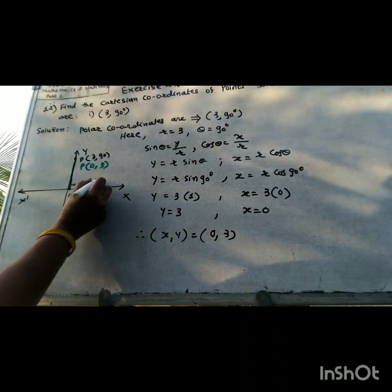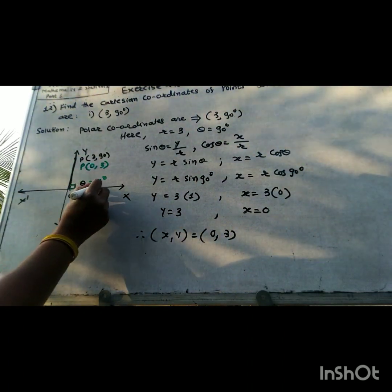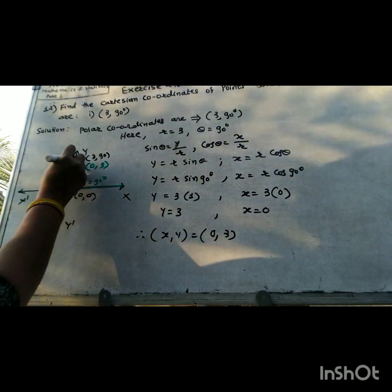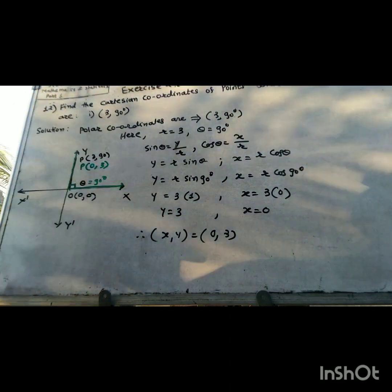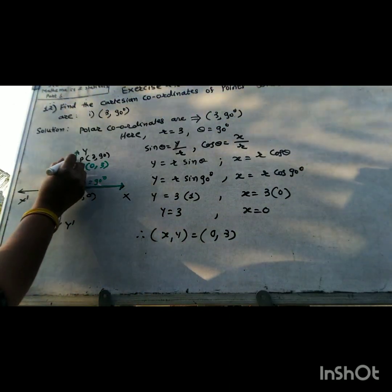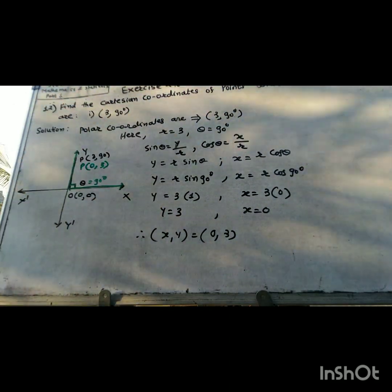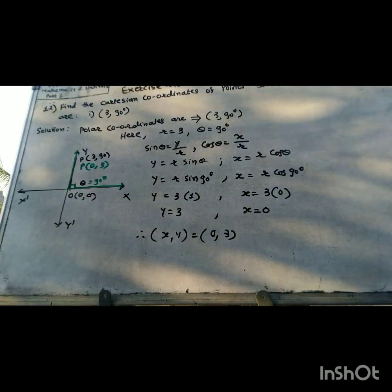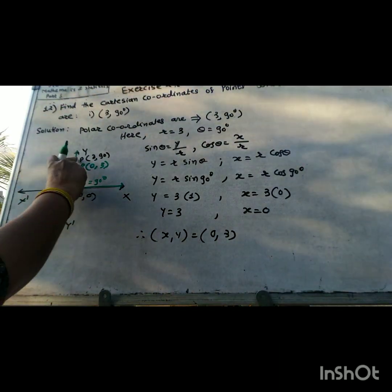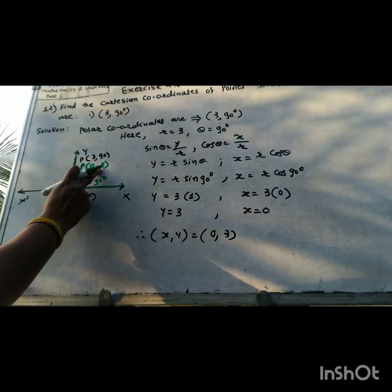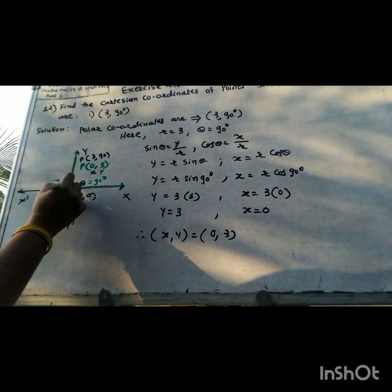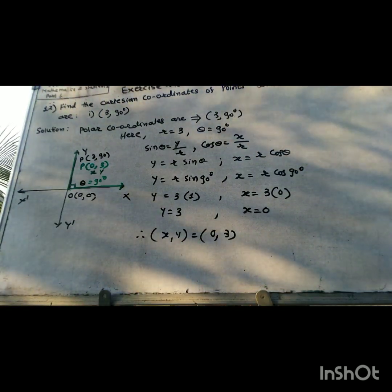Here theta is 90°, x is along the initial arm, and y is along the terminal arm. Point P lies on the terminal arm, which is on the y-axis. Since r is 3, the y-coordinate is 3 and the x-coordinate is 0.